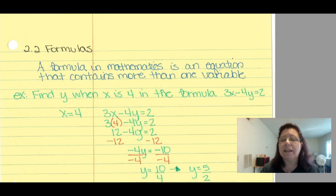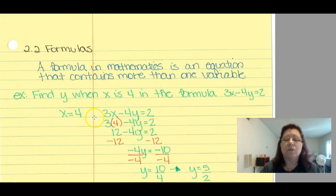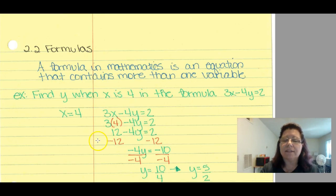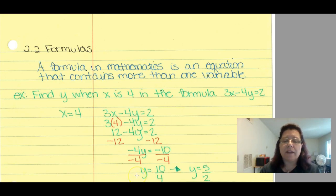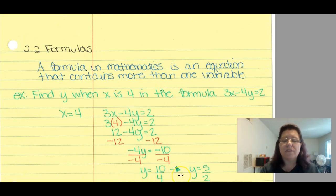Find y when x = 4 in the formula 3x - 4y = 2. We plug in x = 4: 3 times 4 minus 4y equals 2. Three times 4 is 12. Using the addition property of equality, subtract 12 from both sides, leaving -4y = -10. Dividing by -4 using the multiplication property of equality gives y = 10/4, which reduces to y = 5/2.